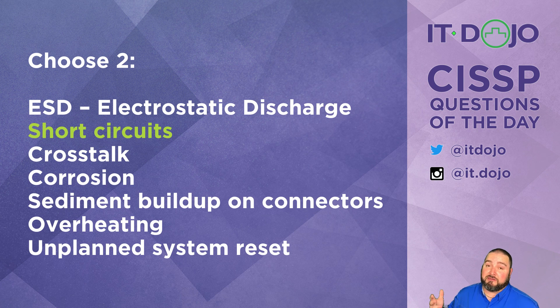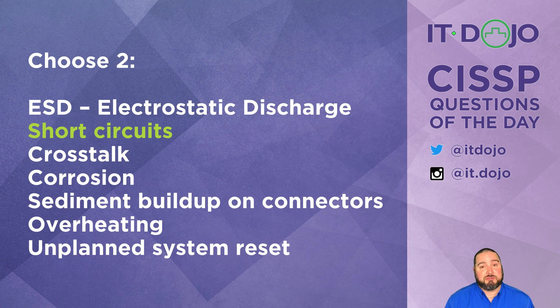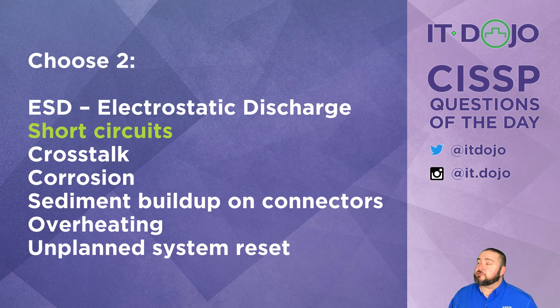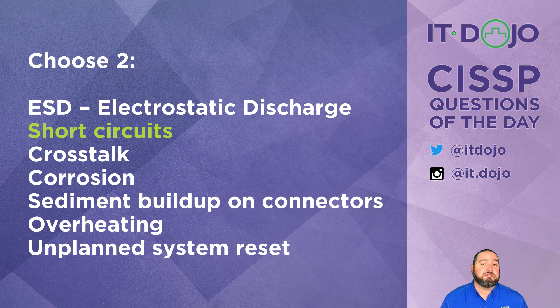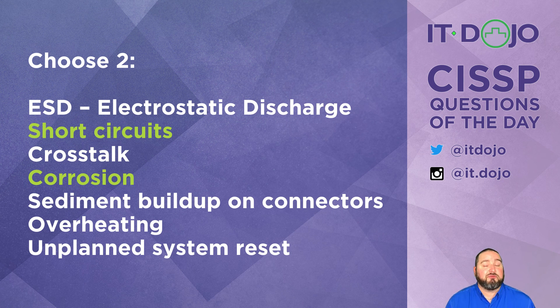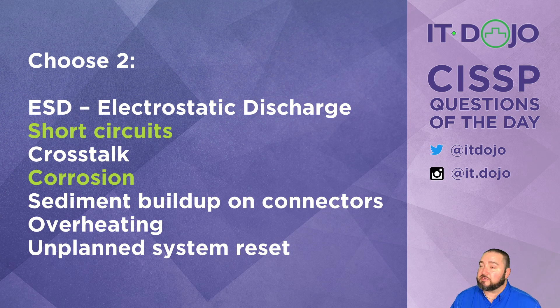Next item on the list is corrosion. Corrosion is absolutely something that could become a problem if the humidity in your environment is too high. So that is the second correct answer we're looking for here.